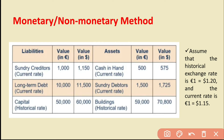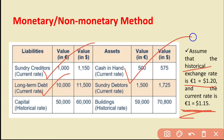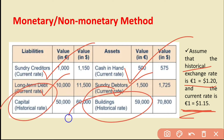Taking an example with a historical exchange rate of 1.12 and current rate of 1.15: monetary items — current creditors, long-term debt, cash in hand, and sundry debtors — are taken at the current rate. Non-monetary items — capital and buildings, whose market value keeps changing — are taken at the historical rate.